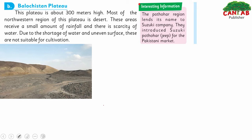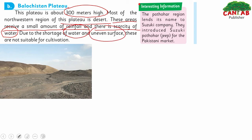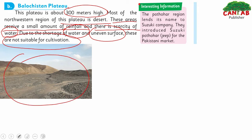The Balochistan Plateau is 300 meters high from sea level. Most of this plateau is desert. These areas receive a small amount of rainfall, leading to water scarcity, and due to the uneven surface, cultivation and agriculture are limited here.